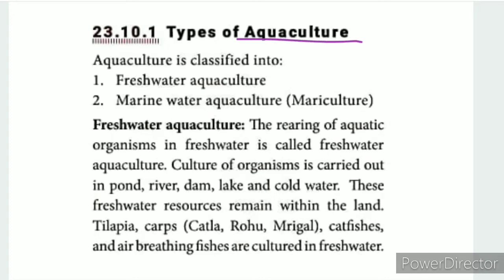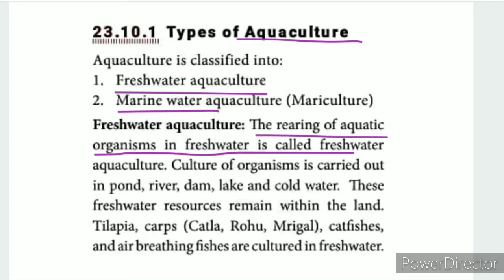The first part is the types of aquaculture. There are two types: fresh water and marine water. The rearing of aquatic organisms in fresh water is called fresh water aquaculture.